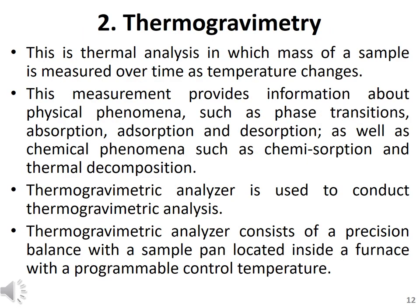The second important quantitative analysis among classical analytical methods is thermogravimetric analysis (TGA). In TGA, a thermal analysis is performed in which the mass of the sample is measured along with changes in temperature. When the temperature changes, the concentration of different analytes changes. This measurement provides information about physical phenomena such as phase transition, absorption, adsorption, and desorption, as well as chemical phenomena such as chemical absorption and thermal decomposition.